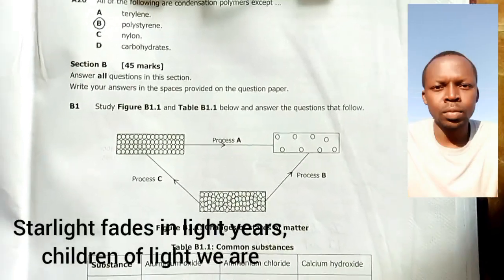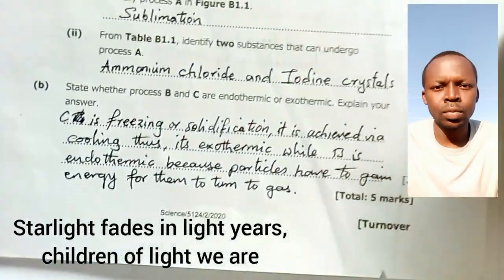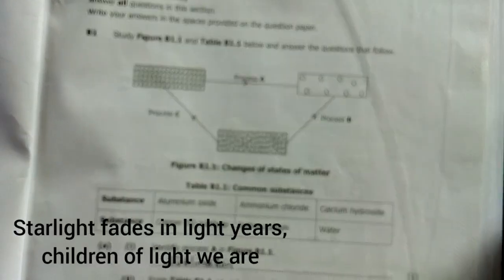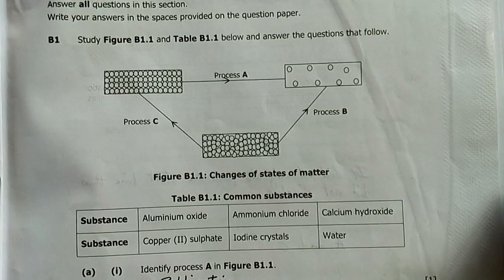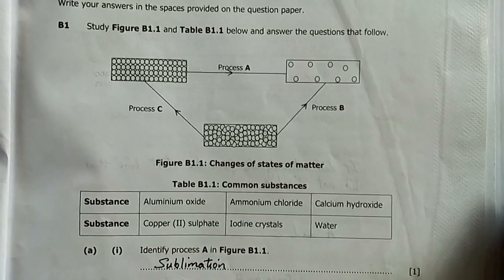This is Section B of Science Paper 2, which is chemistry from the year 2020. Welcome to the second part of this revision. On question B1, you've got that structure right there below showing changes of state of matter with processes A, B, and C.